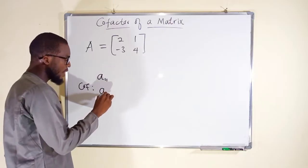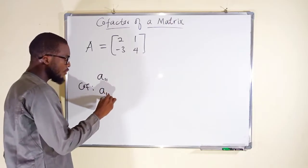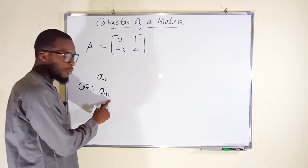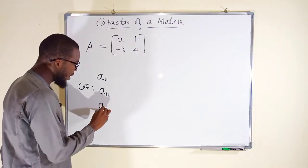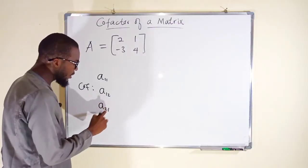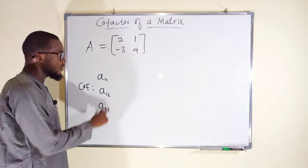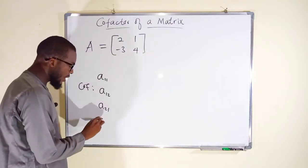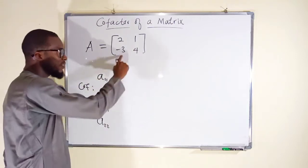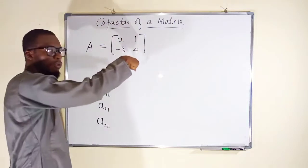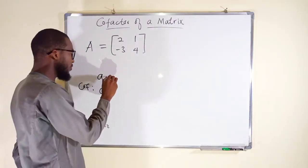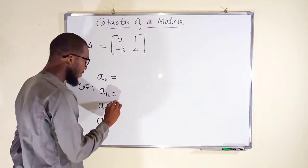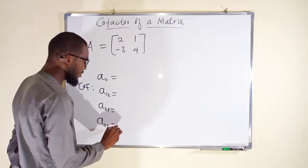We have A12 for the first row, second column element. We have A21 for the second row, first column. And lastly, we have A22, which is the second row, second column element. We are going to find their corresponding cofactors and then replace them back.